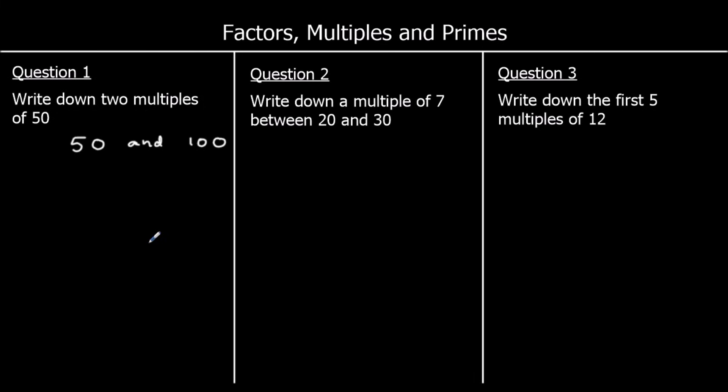Question 2: write down a multiple of 7 between 20 and 30 — a number in the 7 times table between 20 and 30. There are two options: 3 sevens are 21, or 4 sevens are 28. So either one of those.